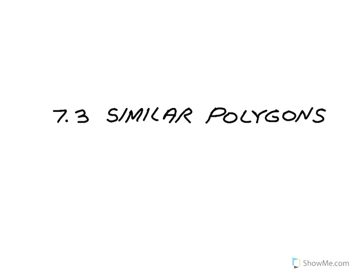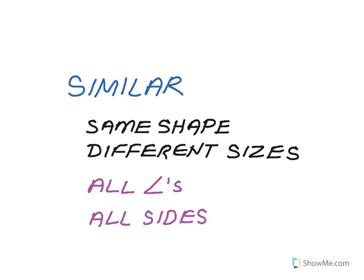Lesson 7.3 is about similar polygons. Similar has a very specific meaning in geometry. When two polygons are similar, it means they have exactly the same shape, but just different sizes.